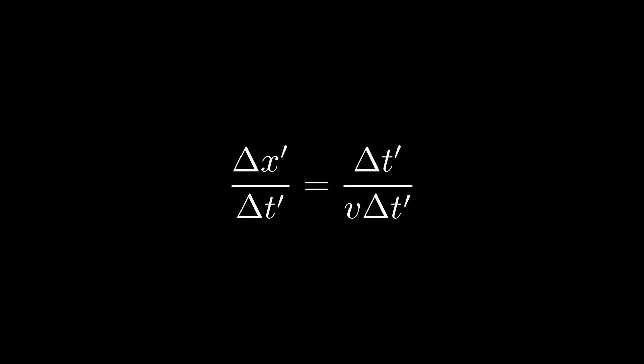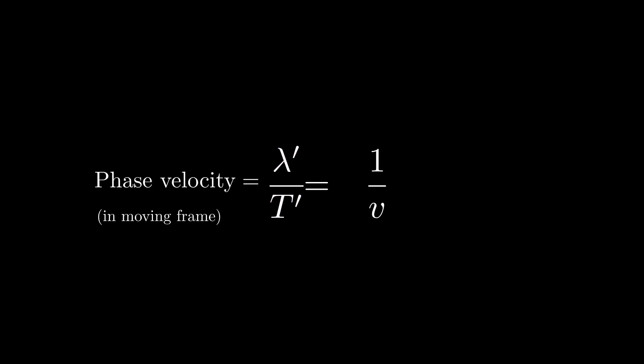First, the times cancel out. Then, let us just remind ourselves that delta X is the wavelength, and delta time is the period. And the left-hand side is the velocity of the wave, in technical terms, phase velocity.